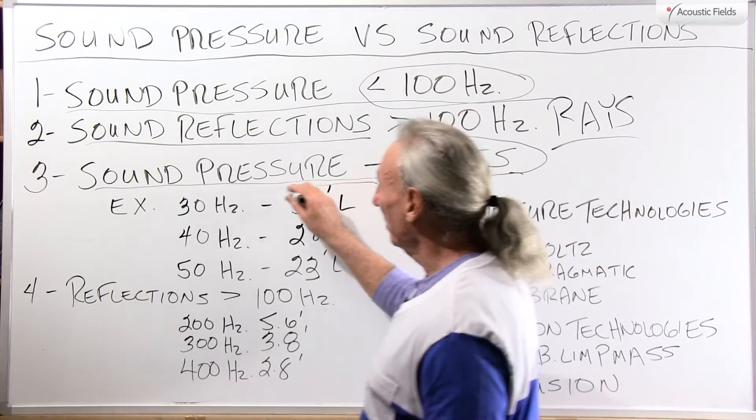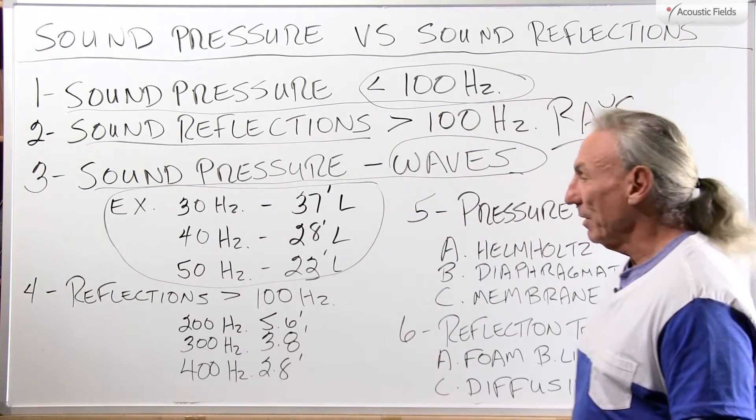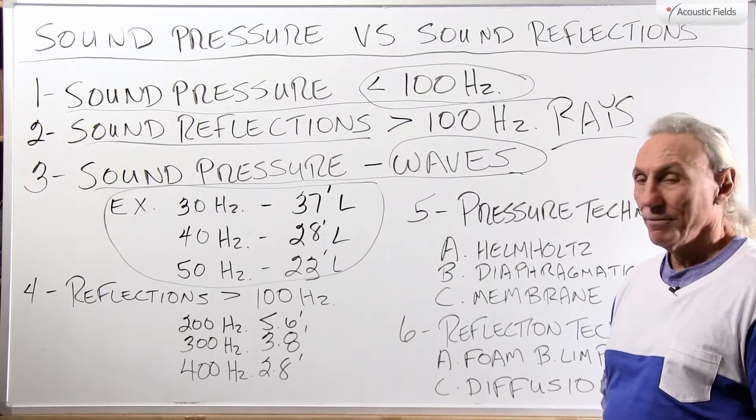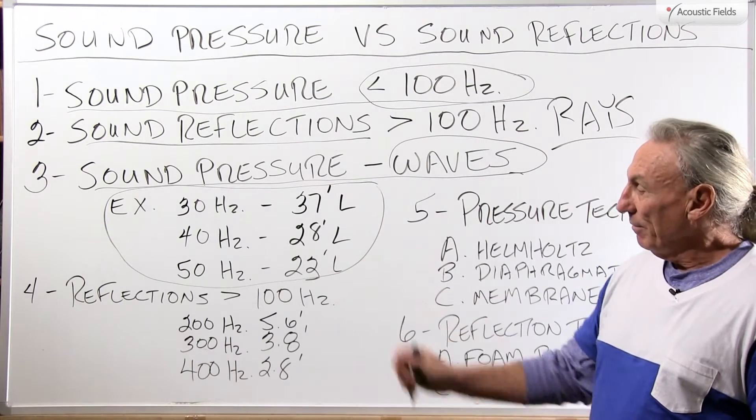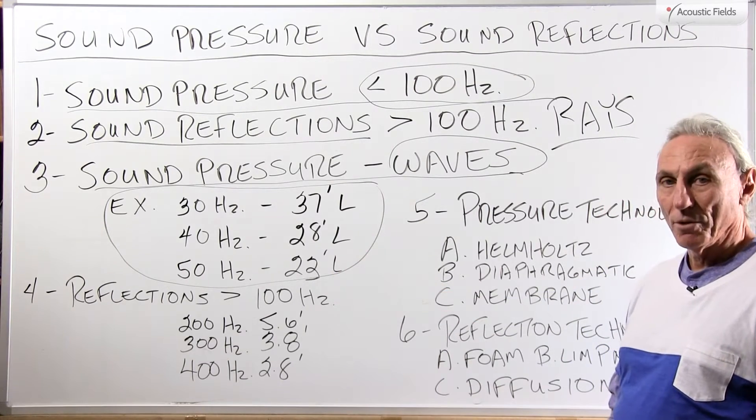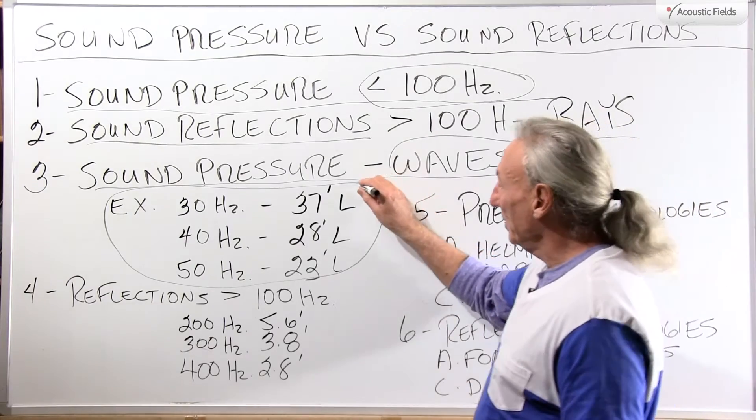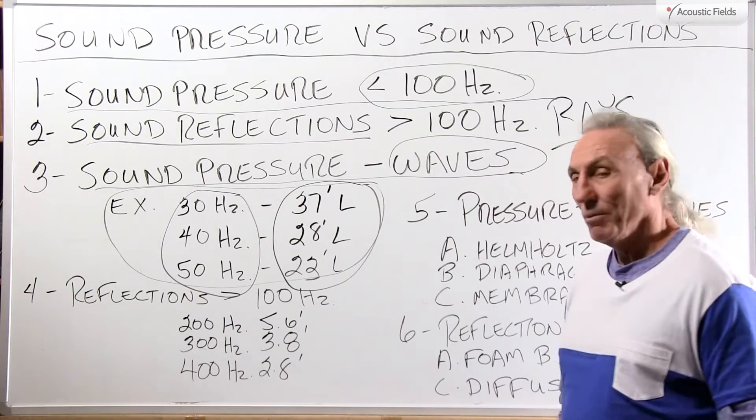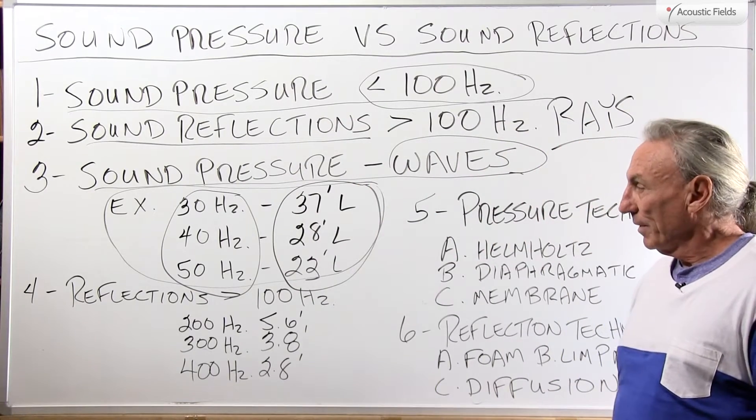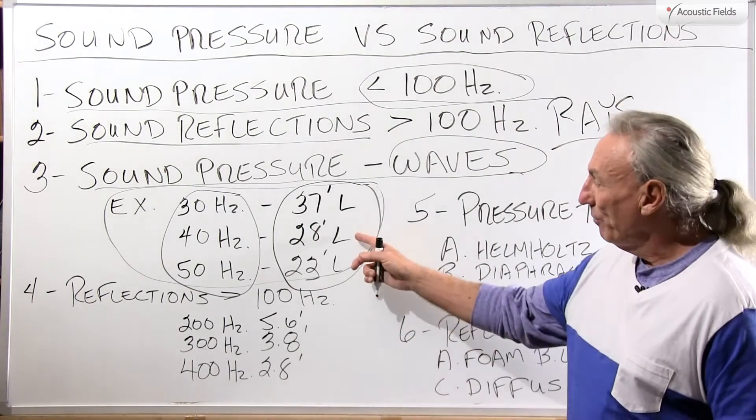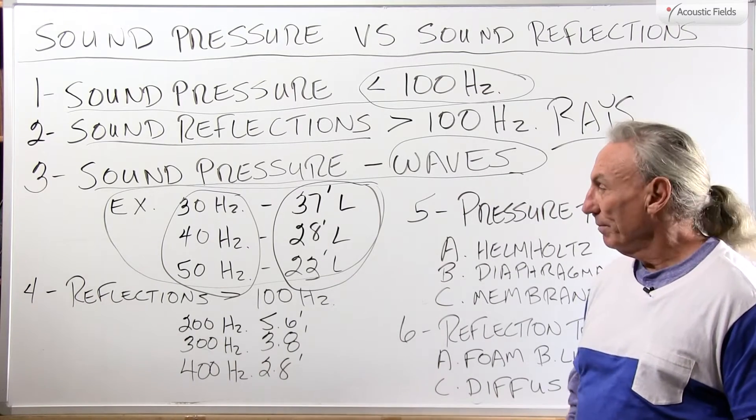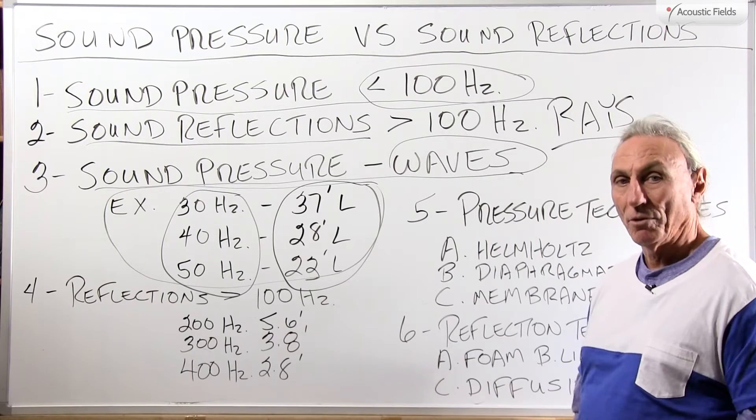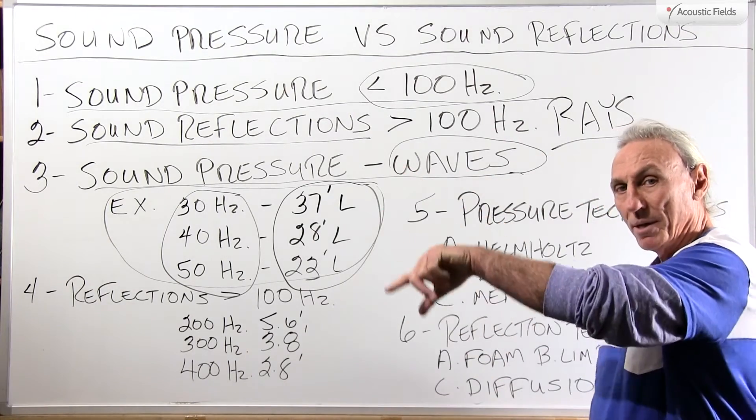Let's take a look at some of those waves and their lengths. A 30 cycle wave is 37 feet long, a 40 cycle wave is 28 feet, and a 50 hertz wave is 23 feet long. So think of these dimensions and match them with the frequency. When you come up with an issue, say alright I have a 40 cycle problem in my room, I know the energy that's causing that problem is 28 feet long in each sequence.